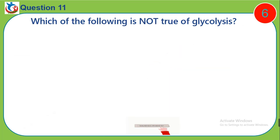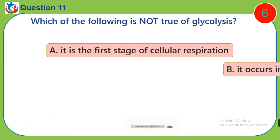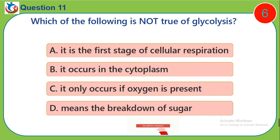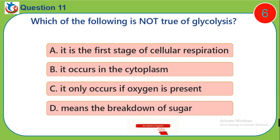Question 11. Which of the following is not true of glycolysis? A. It is the first stage of cellular respiration. B. It occurs in the cytoplasm. C. It only occurs if oxygen is present. D. It means the breakdown of sugar.